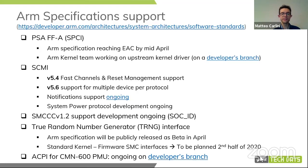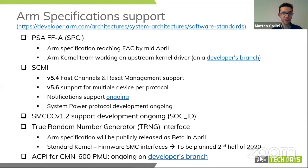The last ARM spec topic is ACPI enablement — it's an ongoing story. The latest item is regarding the CMN-600 PMUs. The spec is out in beta, expected to reach EAC in April, and there is a developer branch ongoing which maps the status of the spec.